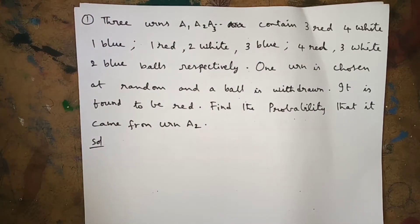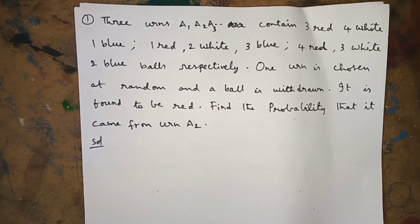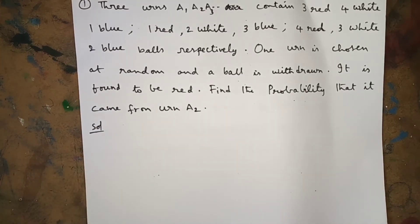Urn A₂ contains 1 red, 2 white, 3 blue balls. Urn A₃ contains 4 red, 3 white, 2 blue balls. One urn is chosen at random and a ball is withdrawn. The first event is choosing an urn; the second event is withdrawing a ball. It is found to be red. Find the probability that it came from urn A₂.